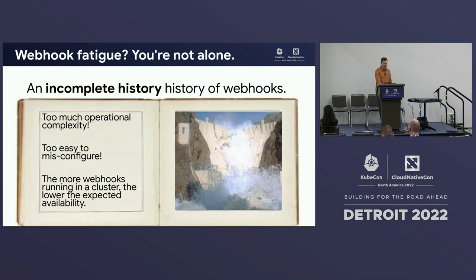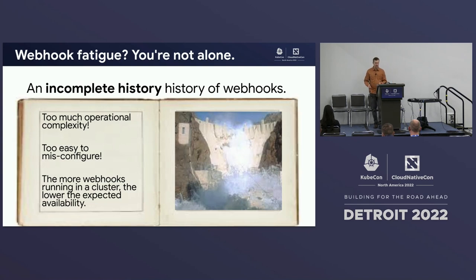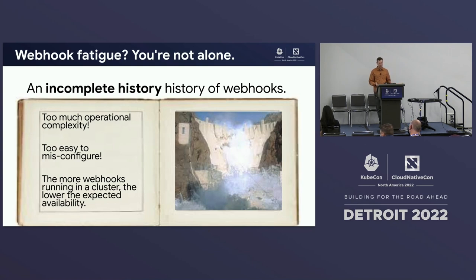There were two major categories of problems causing webhooks to cause so much trouble. One is that they're operationally complex. Every time you want to introduce a webhook into a cluster, you're introducing a new binary that has to run somewhere. You have to figure out how to deploy that binary, upgrade it, roll it back, monitor it, and have run books to deal with any problems. It effectively becomes another component in your control plane, so if you have a lot of webhooks, you have a lot of components in your control plane to manage.